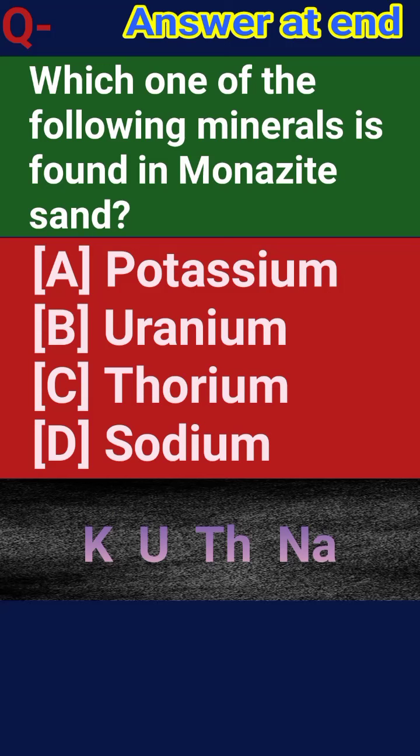Which one of the following minerals is found in monazite sand? a) Potassium, b) Uranium, c) Thorium, d) Sodium.